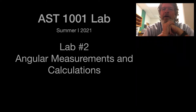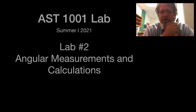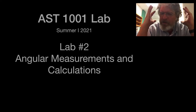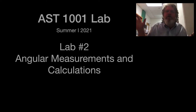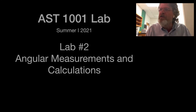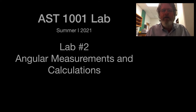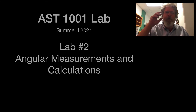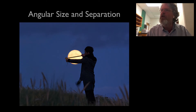A little bit about Lab 2. In astronomy, you deal with the idea that the further something is away from you, the smaller it looks, and the bigger it is, the bigger it looks. That sounds obvious, but in astronomy you run into problems where objects are different sizes and different distances away, and you need to talk about how big an object appears in the sky or how far apart two objects appear.